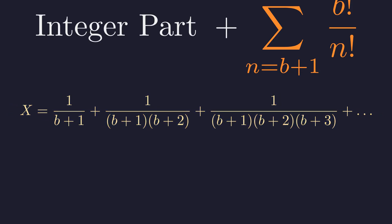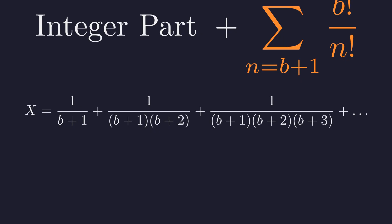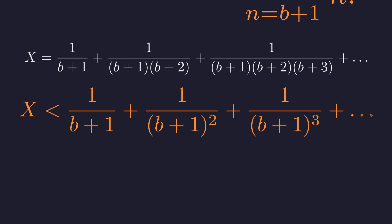All these terms are positive, so X must be greater than 0. To find an upper bound, we can compare X to a larger, simpler series. Since B plus 2 is greater than B plus 1, B plus 3 is greater than B plus 1, and so on, each term in X is smaller than the corresponding term in this geometric series.